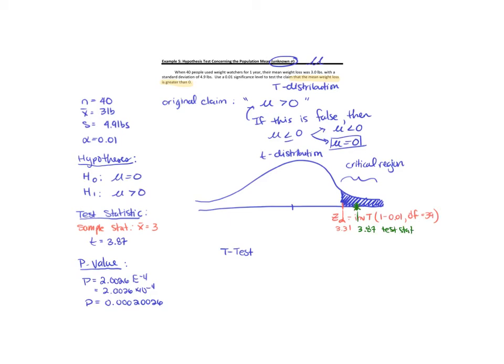Notice that your test statistic falls in the critical region. So if you're using the critical value method, we would reject the null hypothesis. Since our test statistic falls in the critical region, we are going to reject the null hypothesis.